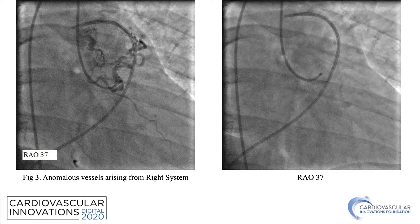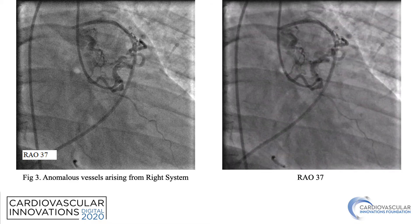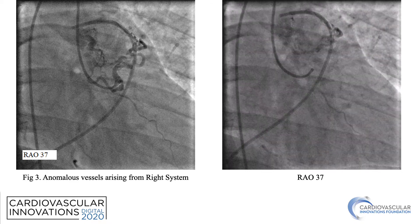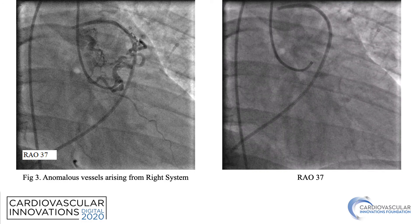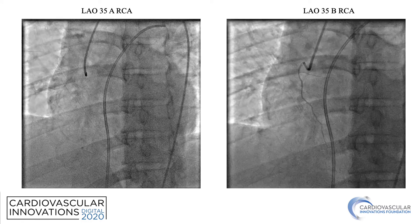This is the angiogram of the right system in which we can more clearly see anomalous vessels arising from the right system, and we can delineate a more anterior as well as a more posterior network. This is just another view of the right system and in this one you can see the anterior and posterior ring.